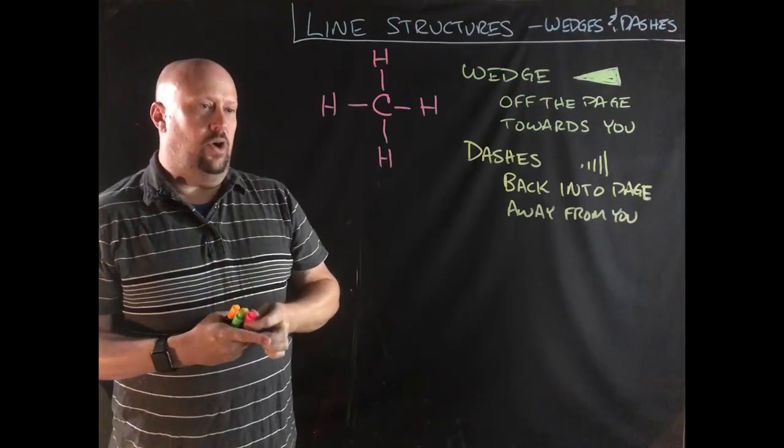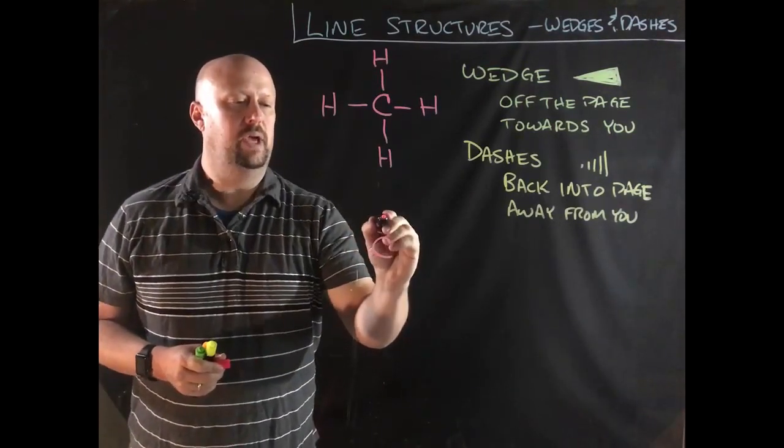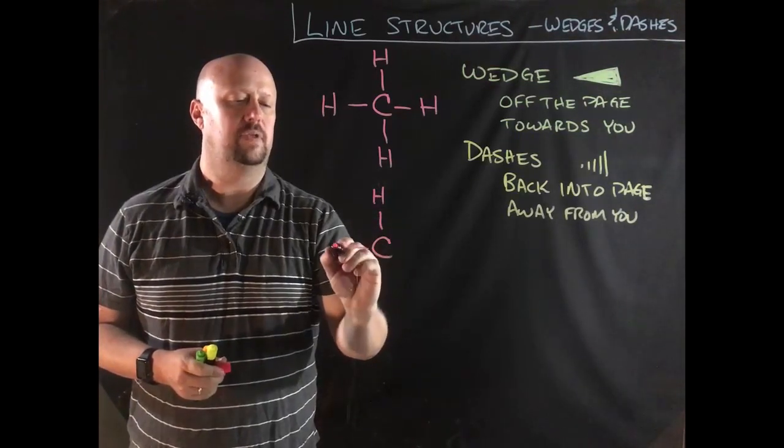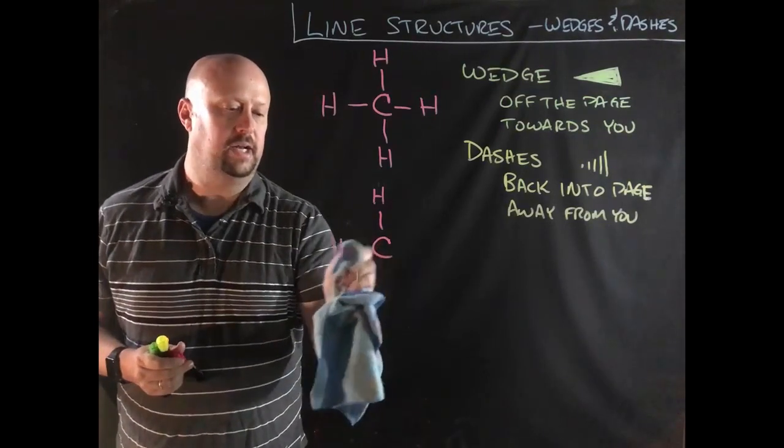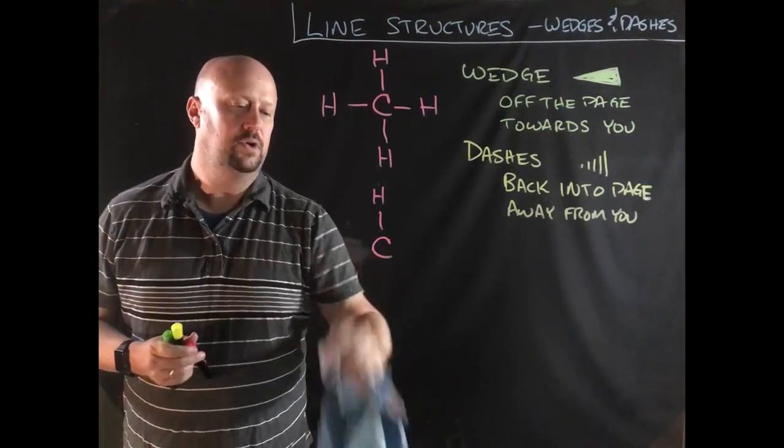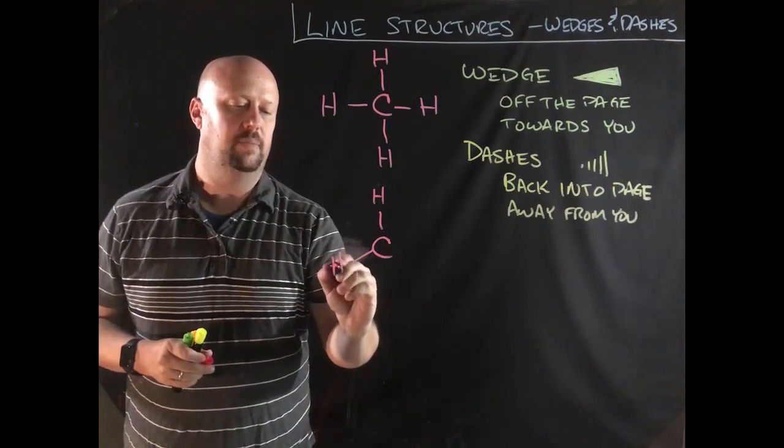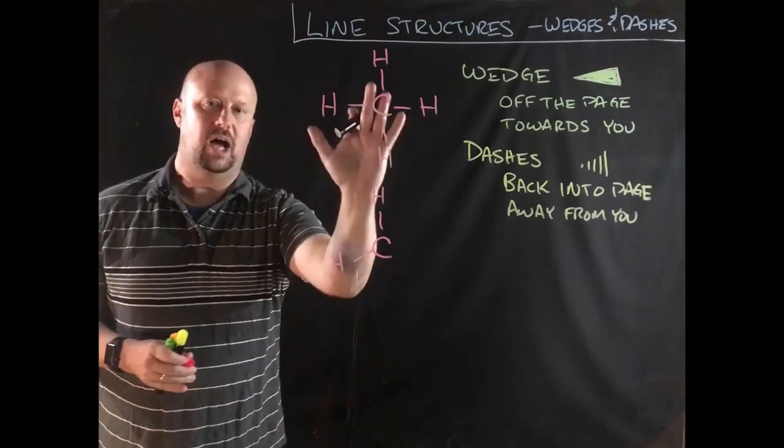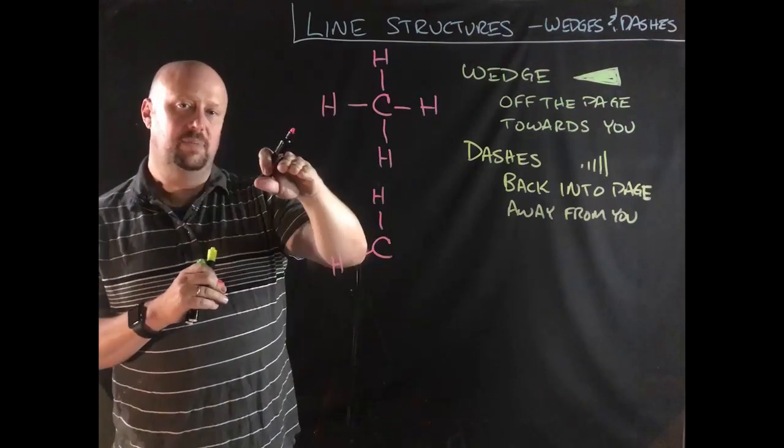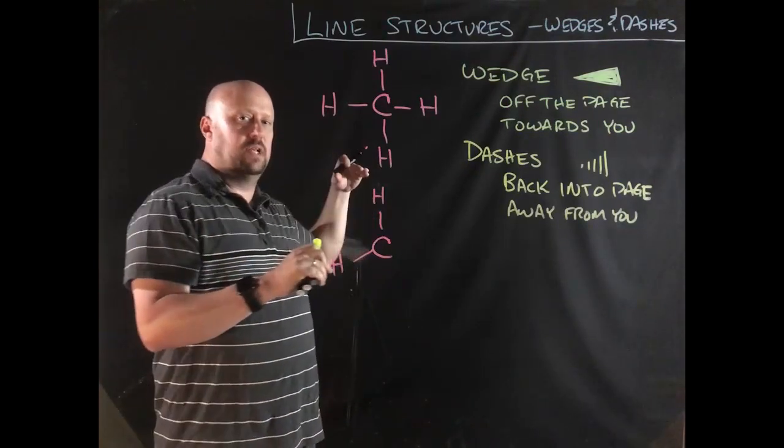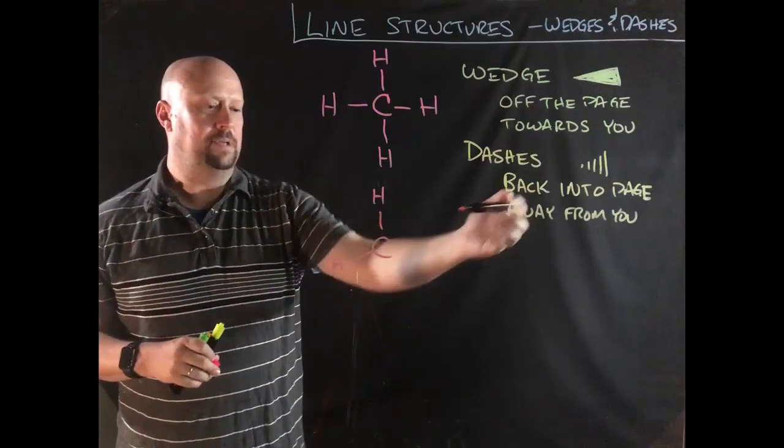So if we're redrawing our methane here then, so we've got carbon, we can draw two of the hydrogens in the same plane. Now, really, I shouldn't draw them like that at 90 degrees. If I were going to be doing a really good job of this, we should draw it so that it was at about 109.5 degrees, right? But they're in the same plane. They're lying flat on the board.